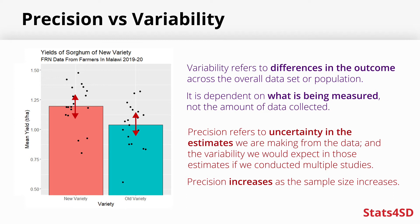The level of precision increases as our sample size also increases. We're thinking in terms of the precision of our estimates across perhaps multiple trials: if we did another trial, would we expect to see the same results? What would be a reasonable similar value in another trial of the same sort? We need to present both variability and precision, because they are different and they capture very different aspects — and both are contextually important.